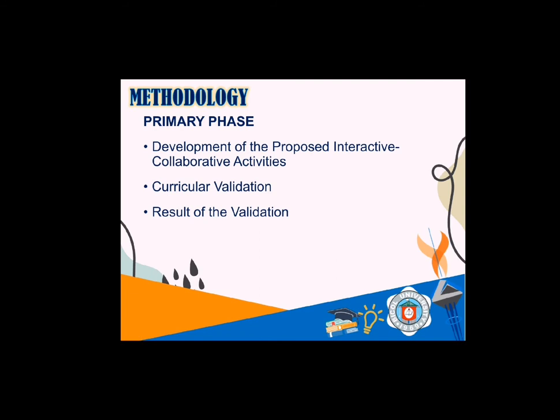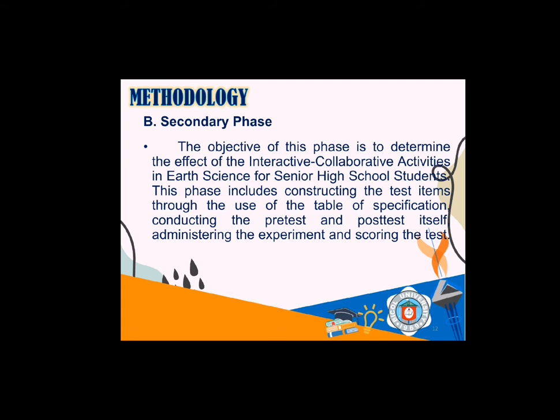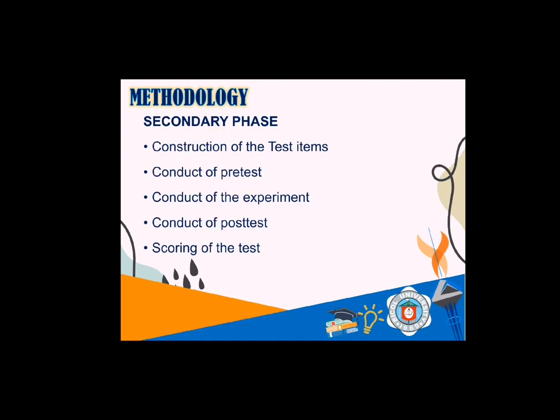The curricular validation of the prepared activities was evaluated by three experienced science teachers of La Purisima National High School and by teachers from a private sector. A questionnaire was employed throughout the validation to determine the curricular validity of the said activities. In the secondary phase, the objective is to determine the effect of the said activity for senior high school students. The phase includes constructing the test items through the use of the Table of Specification or TOS, conducting the pre-test and post-test, administering the experiment, and scoring the test.